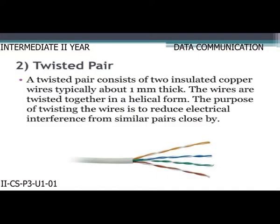Second, twisted pair: a twisted pair consists of two insulated copper wires, typically about one mm thick, twisted together in helical form. The purpose of twisting the wires is to reduce electrical interference from similar pairs close by.